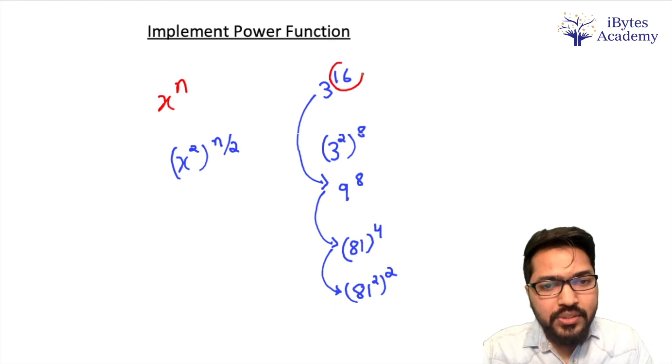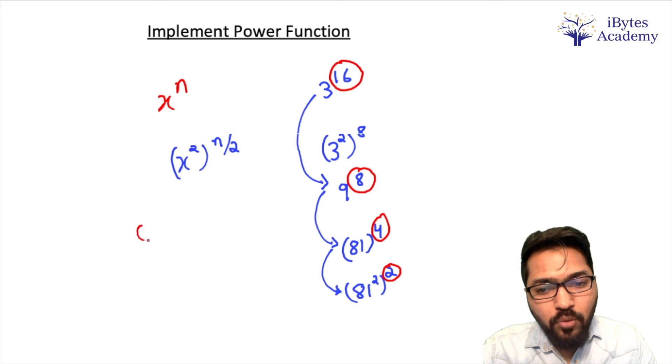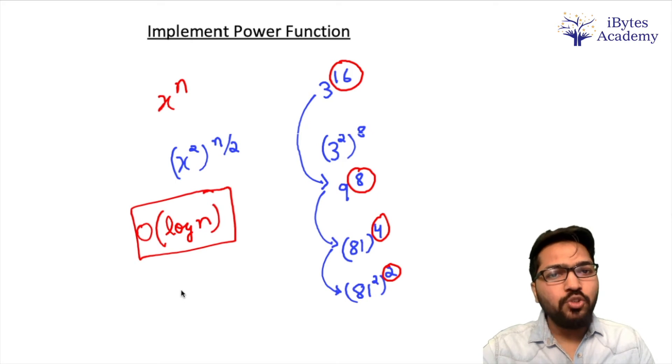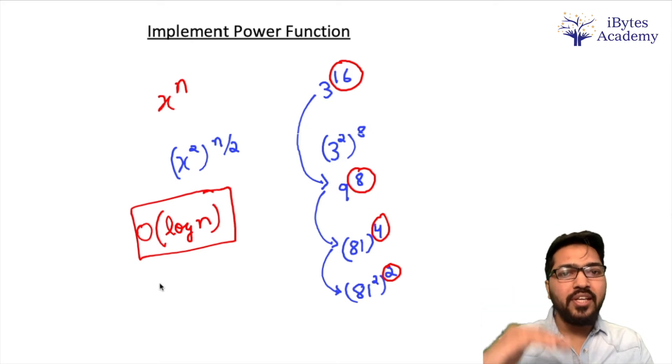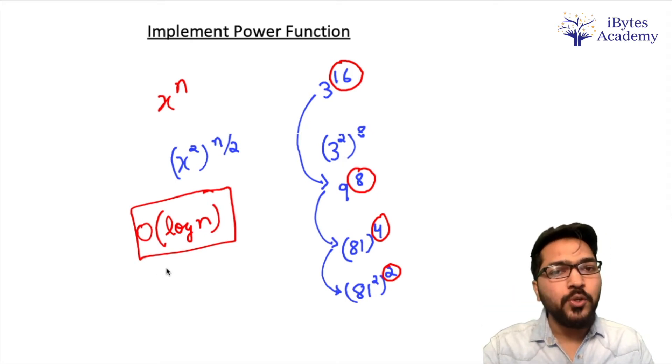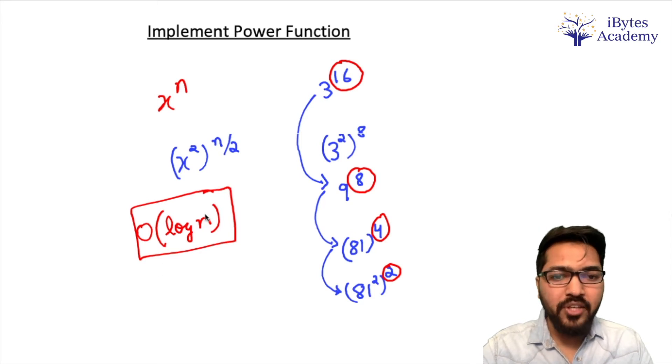If we started with n value as 16, then from 16 we reached 8, from 8 to 4, from 4 to 2. So that means our time complexity will come out to be O(log n). Because n value is getting divided by 2 repeatedly. So our time complexity is going to be O(log n) which is obviously better than O(n).